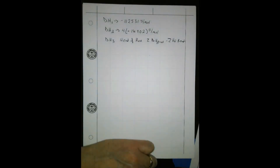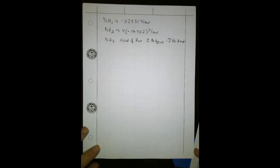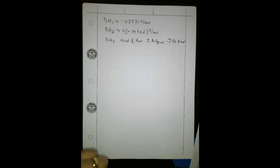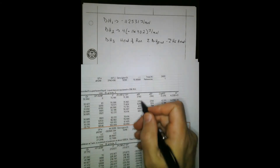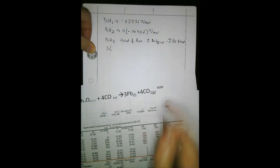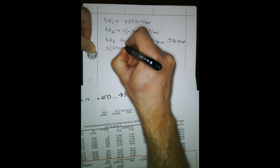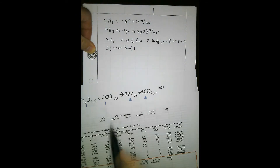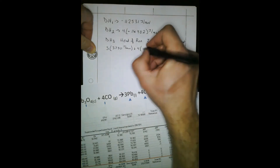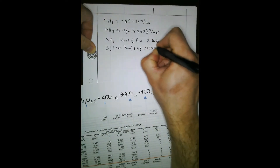We're going to calculate the heat of reaction using these tables. Products minus reactants. The products are lead. This is a little different than standard because we do have a heat of formation for lead. We know from our equation that we have to multiply 3 times 3,740 joules per mole. Then we add carbon dioxide: 4 times the heat of formation for carbon dioxide, which is negative 393,508 joules per mole.